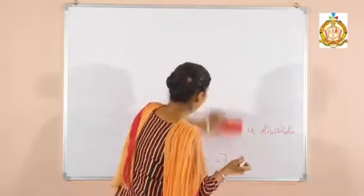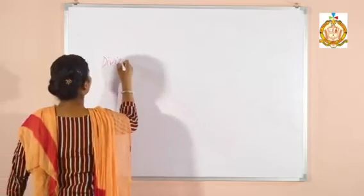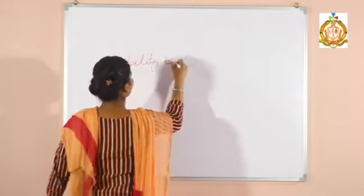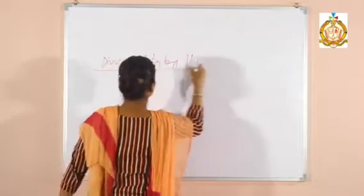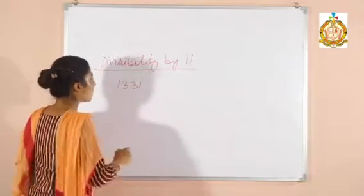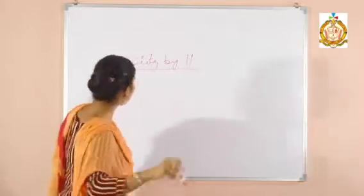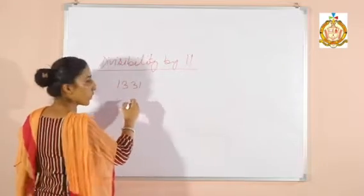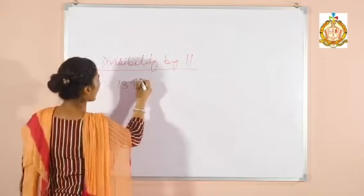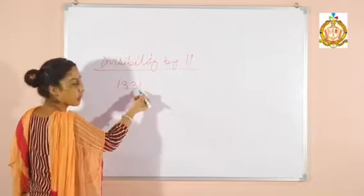Next, divisibility by 11. Students, I will take a statement like 1331 to check the divisibility by 11. So first of all, see the position of the digits. This digit is on the first position, so it is on an odd position. This is on the second position, even position. This is on the third position, odd position. And this is on the fourth position, even position.